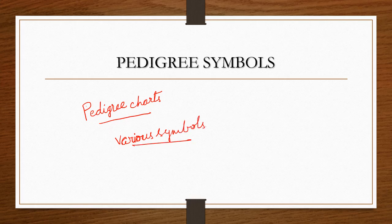The symbols used represent male, female, defective male, defective female, carrier female, mating, dizygotic twins, fraternal twins, identical twins, and stillbirths — meaning death before delivery. Let's see how these are all represented in the form of symbols in pedigree charts.